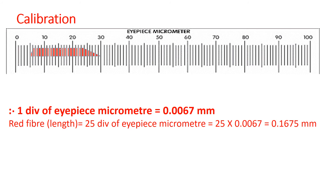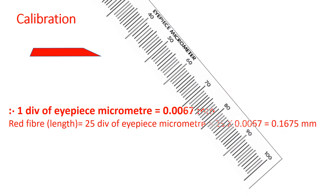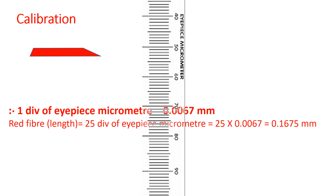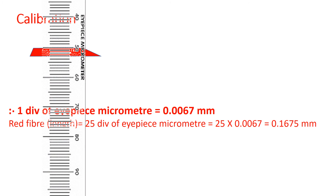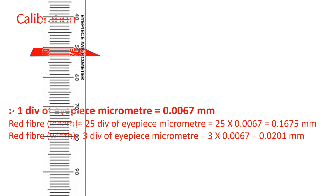To measure the width, we rotate the eyepiece micrometer by exactly 90 degrees and move the slide so the fiber superimposes on the scale. For the red fiber, the width starts at division 50 and ends at 53 — that means the width is 3 divisions of the eyepiece micrometer.